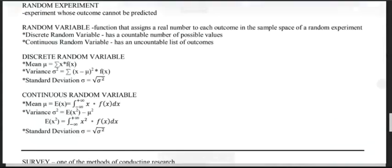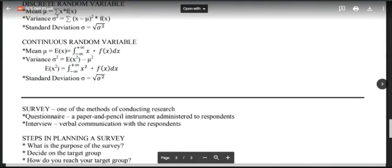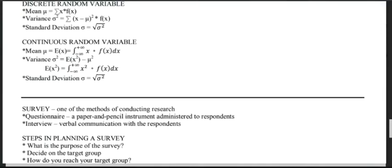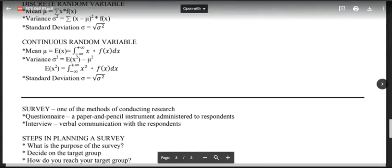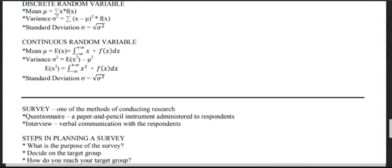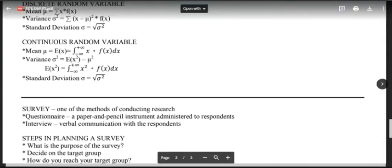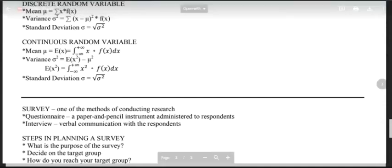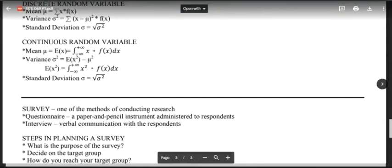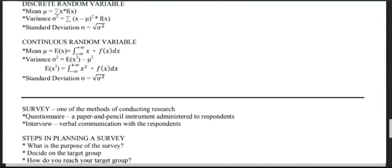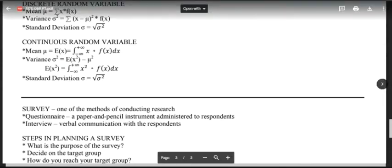For continuous random variables (uncountable outcomes), the formulas use integration. Mean μ = ∫ x·f(x) dx from −∞ to +∞. Variance σ² = E[x²] − μ², where E[x²] = ∫ x²·f(x) dx. Standard deviation = √variance.